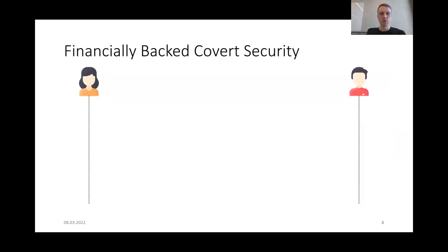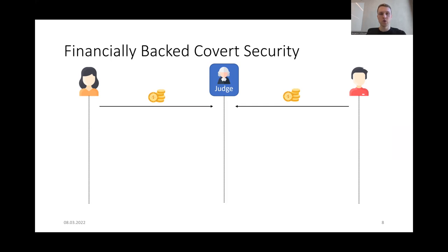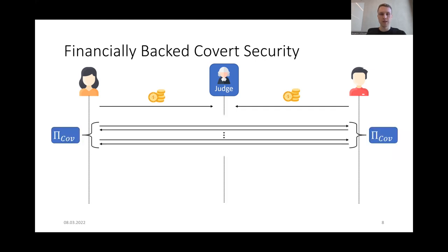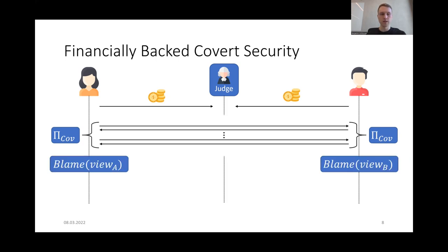Let's start with our notion of financial backed covert security. Here we extend the model so that besides the parties that want to execute some protocol, we have a so-called judge party. Let me emphasize that this is different from the judge algorithm of a PVC protocol — here we have a party that may interact with other parties. At the beginning, all parties send some coins to this judge party as security deposits. Then the parties execute the covertly secure protocol, where the judge does not need to contribute. Afterwards, each honest party can execute the blame algorithm using his view as input to check if the other party behaved maliciously during the execution.